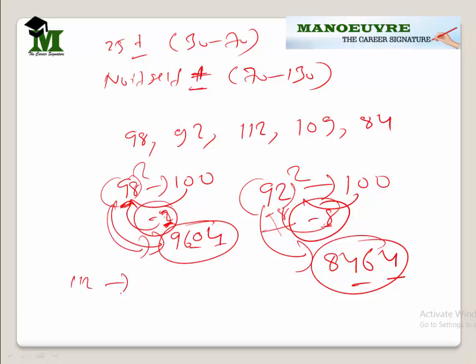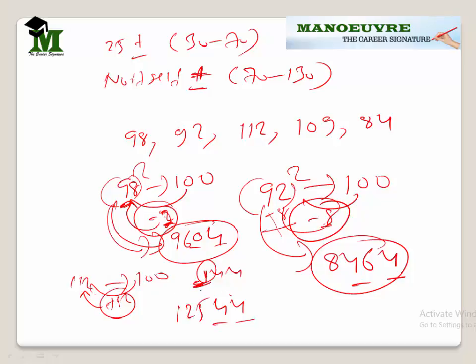What about 112? Compare by 100 — it is 12 more. 12 squared is 144, so write 44 as it is and 1 is the carry. Since the number is more, you add: 112 plus 12 gives 124, plus 1 carry gives 125. So 112 squared is 12544. In this case, addition and subtraction are done from the number itself whose square you are finding.